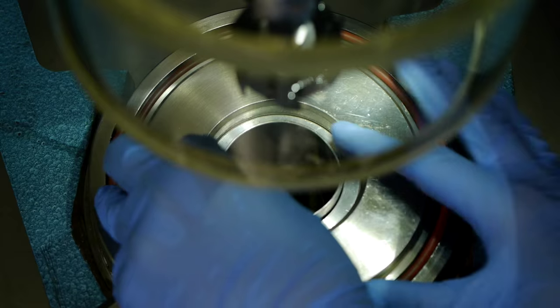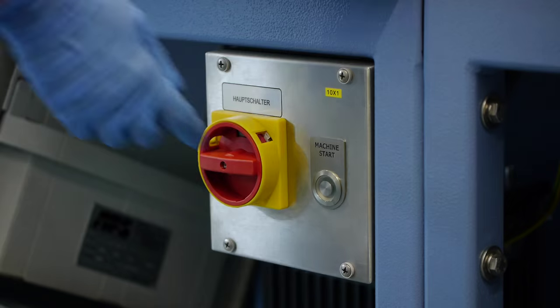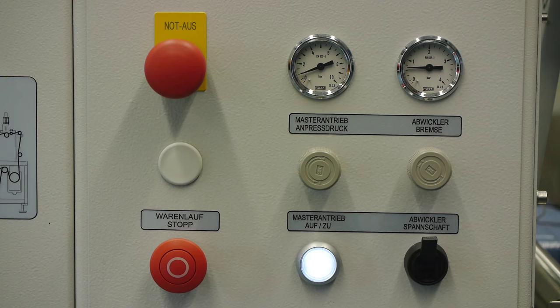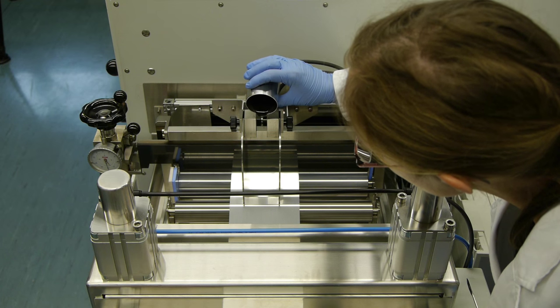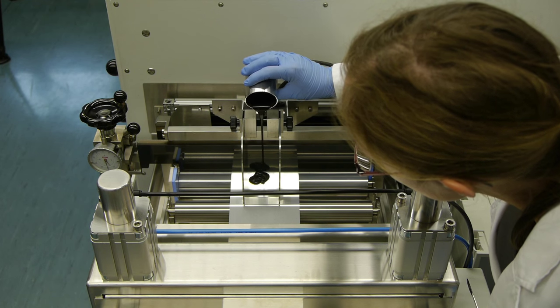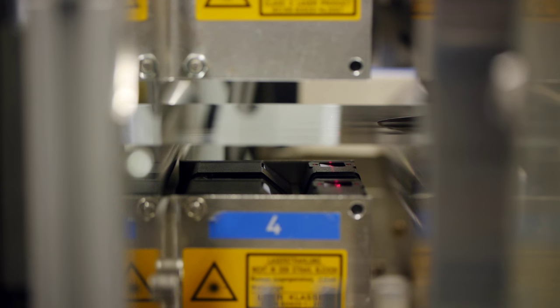The electrode paste is then taken to the coating machine, where it is applied to a current collector. The paste is poured under a sheet of aluminium foil, which is slowly moving through the machine. A sort of metal bar, the doctor blade, scrapes off excess paste.